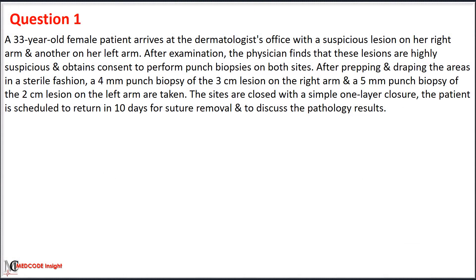Case 1: A 33-year-old female patient arrives at a dermatologist's office with a suspicious lesion on her right arm and another on the left arm. After examination, the physician finds these lesions are highly suspicious and obtains consent to perform punch biopsy on both sides. A 4 mm punch biopsy of the 3 cm lesion on the right arm and a 5 mm punch biopsy of the 2 cm lesion on the left arm are taken. The sites are closed with a simple one-layer closure. The patient is scheduled to return in 10 days for suture removal and to discuss pathologic results.